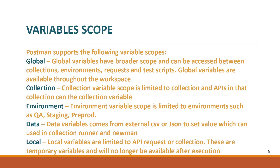Postman supports five different variable types based on their scope: global, collection, environment, data, and local. Global variables have the largest scope and can be accessed throughout your collections, environments, and requests in that workspace. Collection variables are utilized and called within a particular collection and cannot be accessed outside of it.